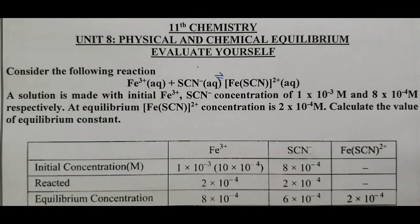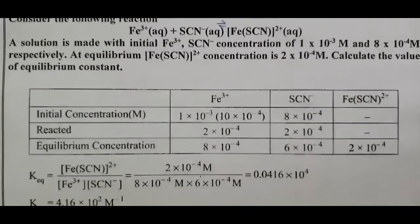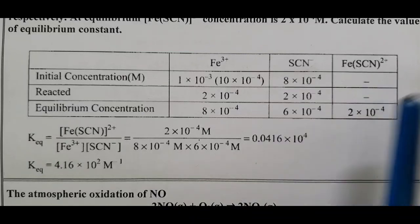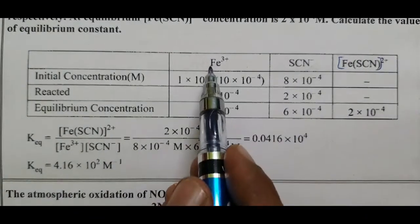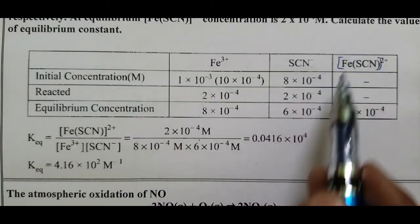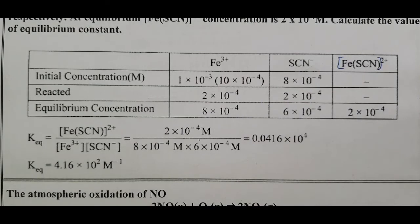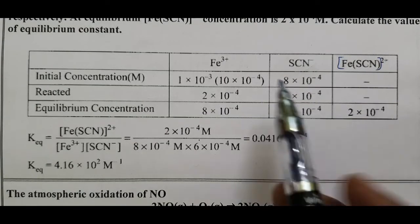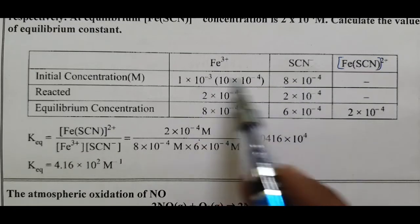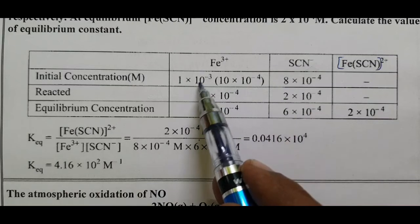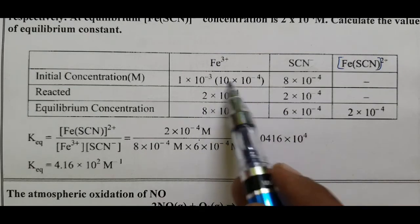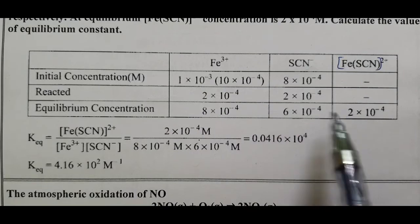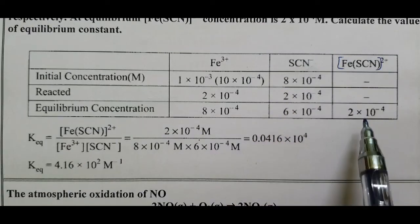Calculate the value of the equilibrium constant. Reactants: Fe³⁺ and thiocyanate ion. Product: FeSCN²⁺. Initial concentrations: Fe³⁺ = 1×10⁻³ M, SCN⁻ = 8×10⁻⁴ M. At equilibrium, FeSCN²⁺ concentration = 2×10⁻⁴ M.